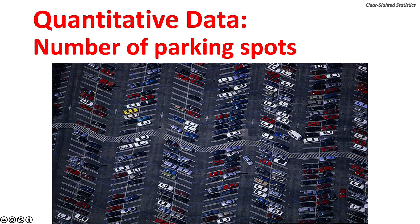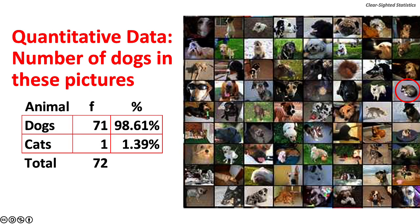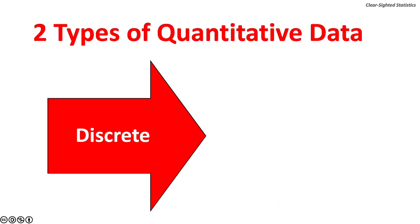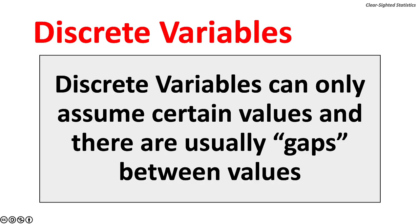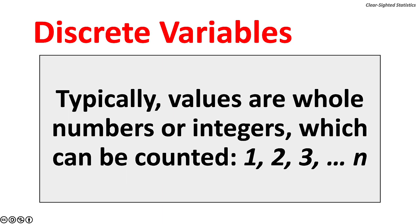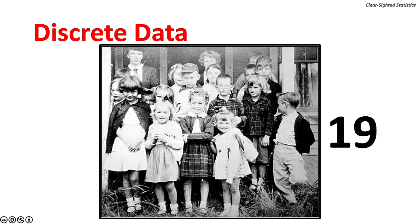Here are some examples of quantitative data: the number of parking spots in a parking lot, or the number of dogs in a picture. There are two types of quantitative data. The first type is discrete data. Discrete variables can only assume certain values, and there are usually gaps between these values. Typically these values are whole numbers or integers, which can be counted: one, two, three, and so on. The number of children in an old photograph is discrete data.